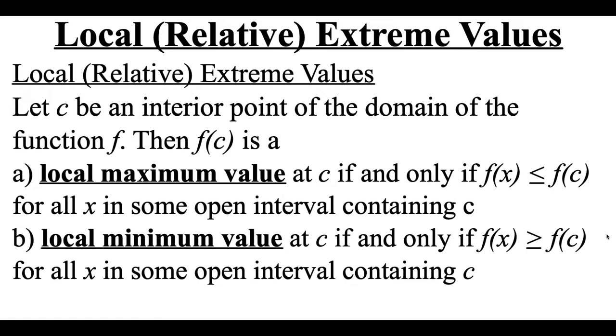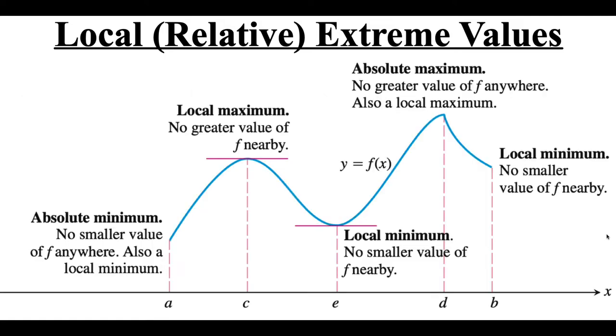Now visually what these are going to look like compared to absolute maximums and minimums. So we've got this graph that we're looking at. Remember the absolute maximum is the highest point at any place on the graph. So this point right here is an absolute maximum because there are no other points that are higher than it.